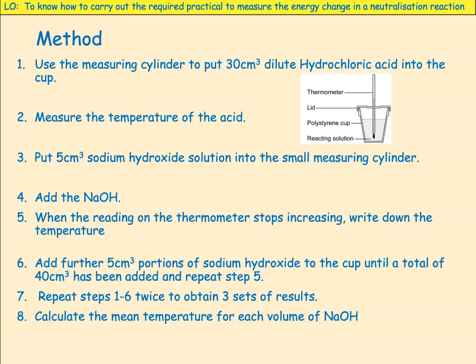Once you've done that, repeat steps 1 to 6 two more times so that you've got three sets of results. Then calculate the mean temperature for each volume of sodium hydroxide — the mean for 5 cm³, the mean for 10 cm³, the mean for 15 cm³, etc.